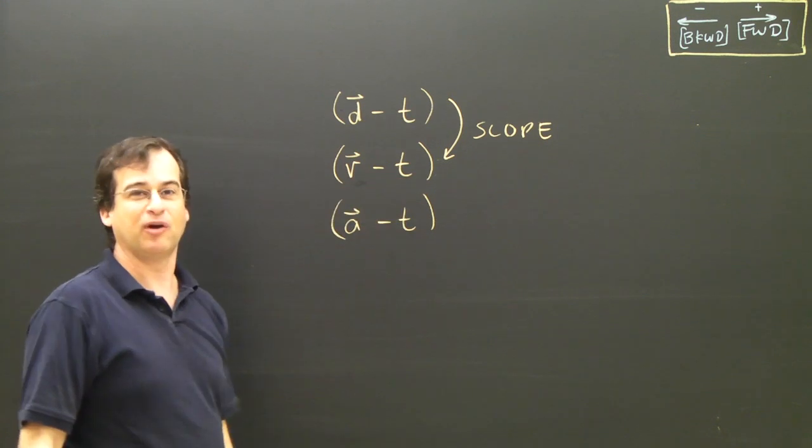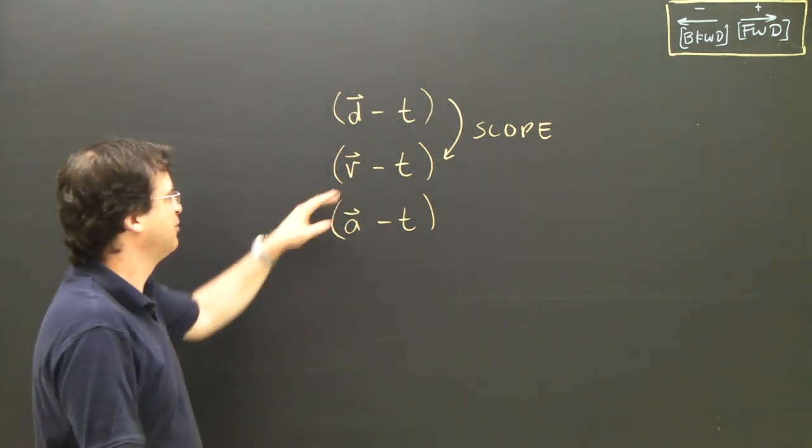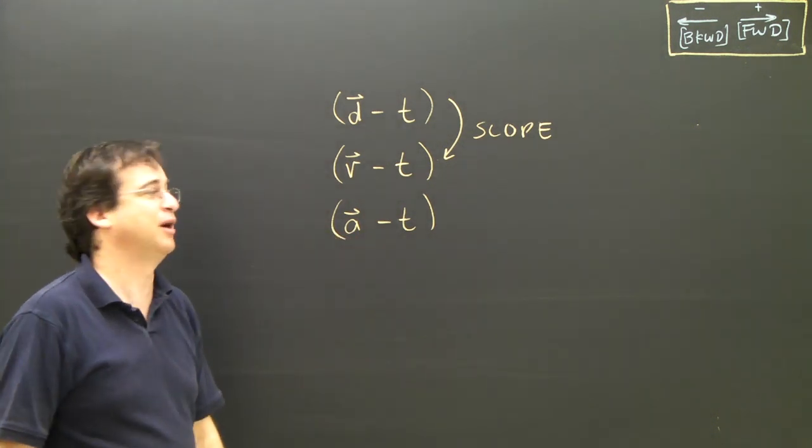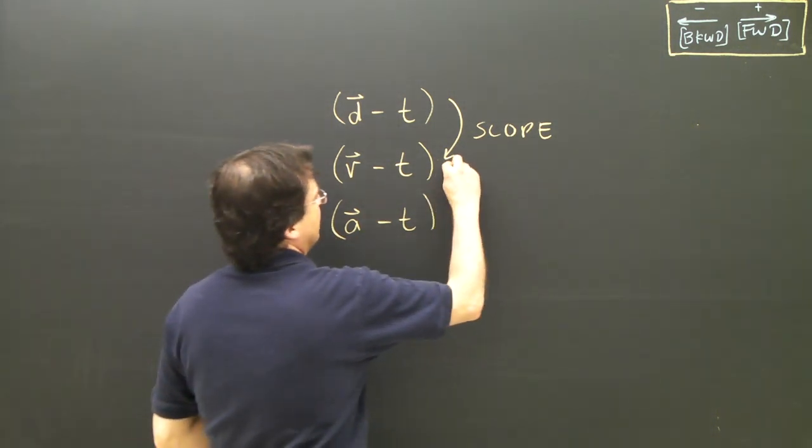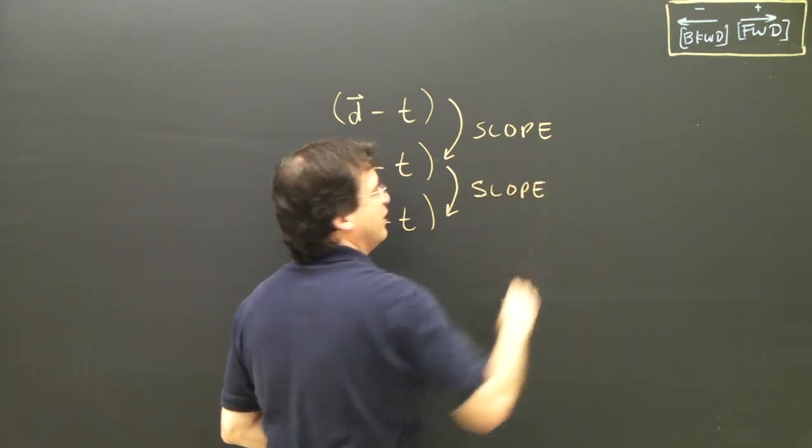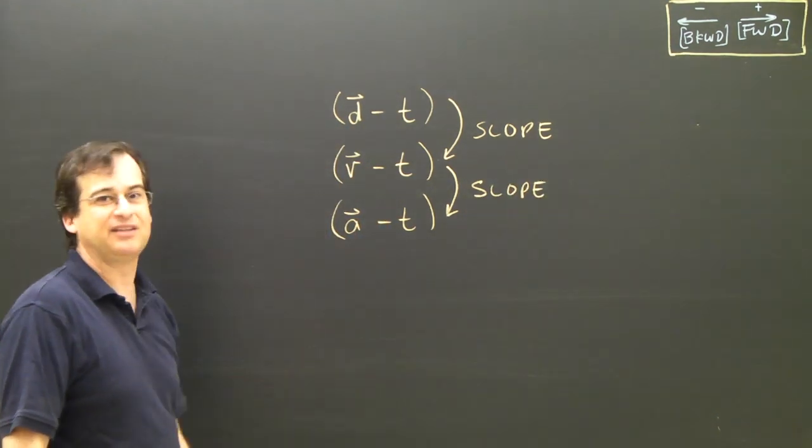So you could say that the slope of this graph will give us the information to draw this graph. Then we take the velocity-time graph, we also took the slope of that, and we found the slope of the velocity-time graph gives us the acceleration at every given time.